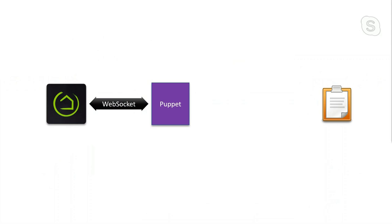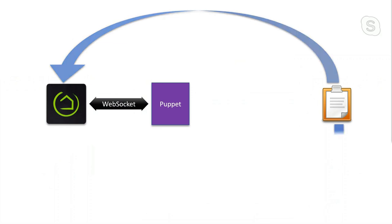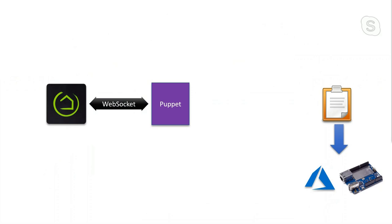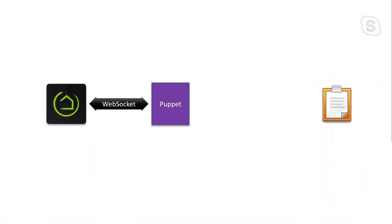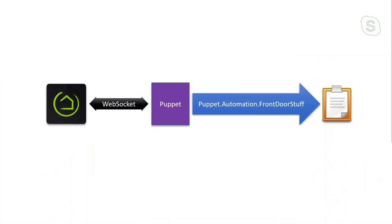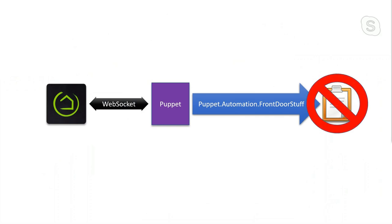It looks for classes that declare through attributes that they want to know about front door contact events. It finds all matching automations — for example, Puppet.Automation.FrontDoorStuff — and calls the Handle method implemented by IAutomation. It sets it up as a Task and lets it run to completion. While running, it can interact with Hubitat over the Maker API, go out to Azure, AWS, other IoT devices — whatever you can do in .NET Core.